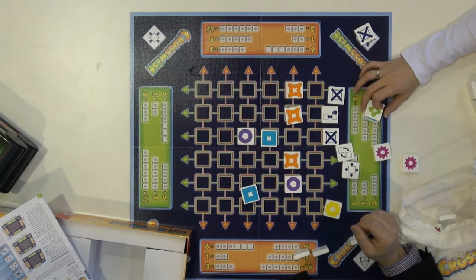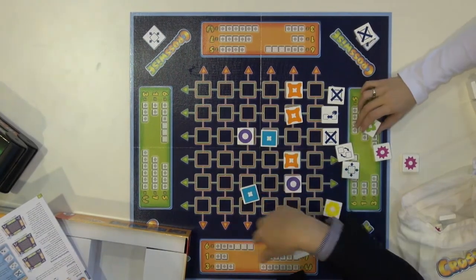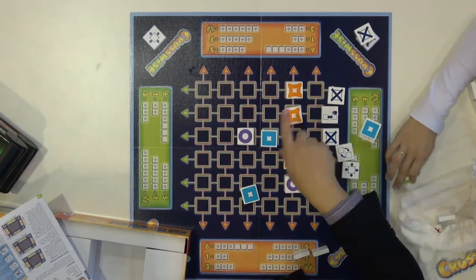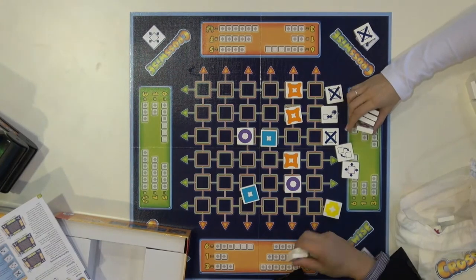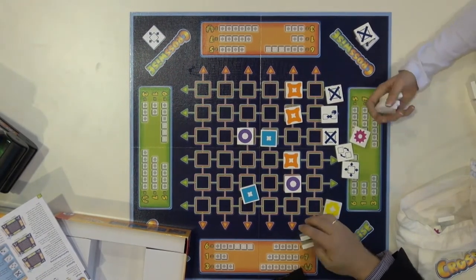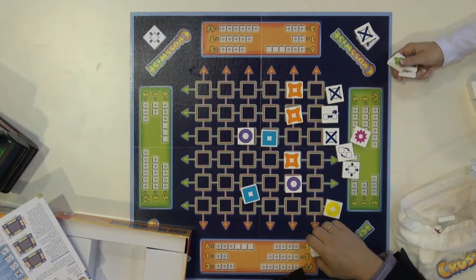And you just win based on how many points you have at the end or if you score... At the end is when the board is full. Right. Then you score every row and the people with the most points are the winner. Okay. And so while you're playing, if someone lays out six or is able to get six, it ends right there. That's it? Yeah.